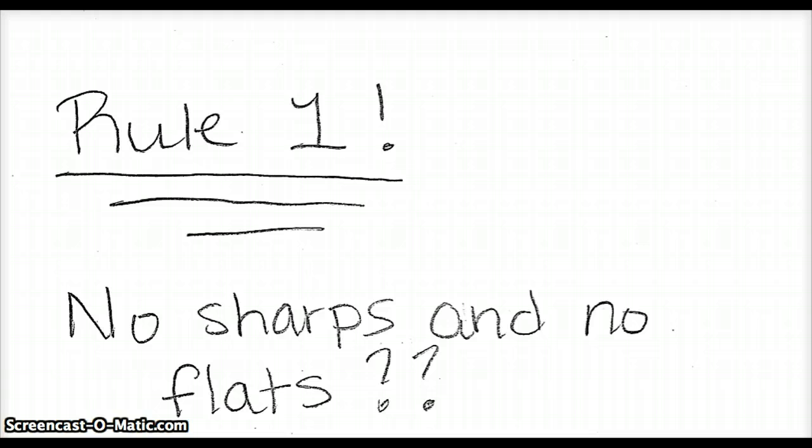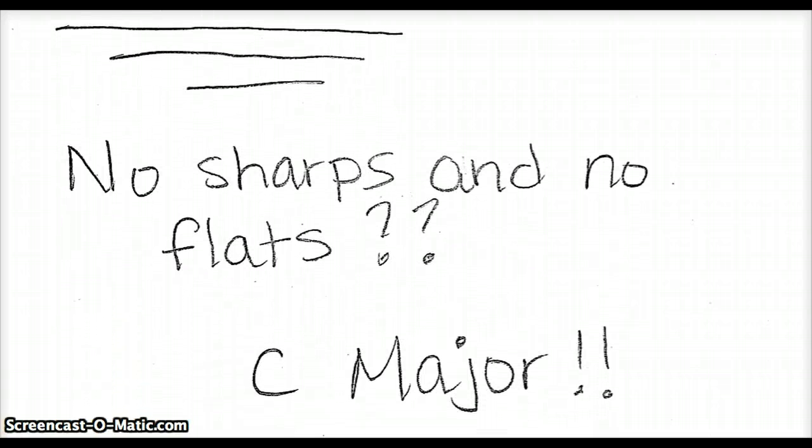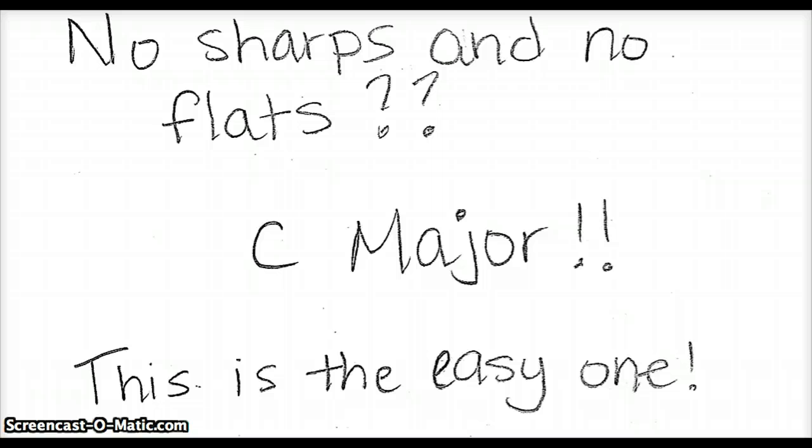The first rule is the easiest one, and that is if there are no sharps and no flats in the key signature, then you are in C major. That's an easy one to remember. If there's nothing in the key signature next to the treble clef or next to the bass clef, then you are in C major.